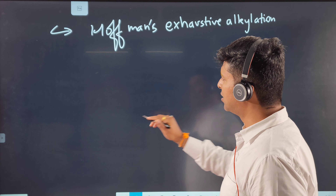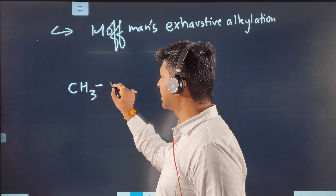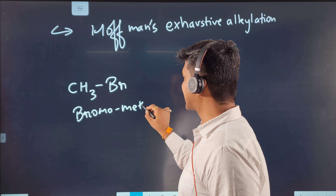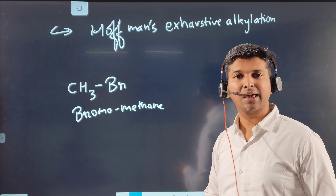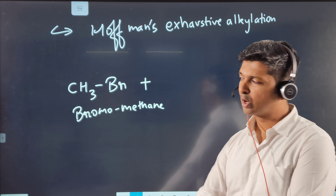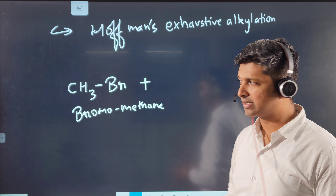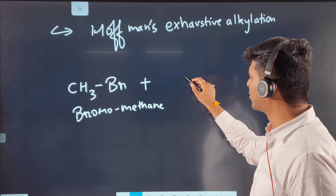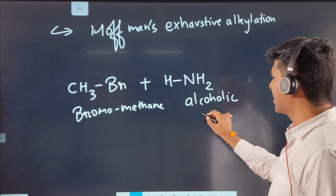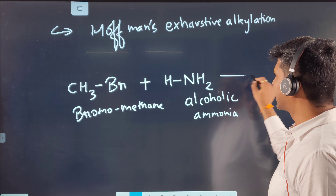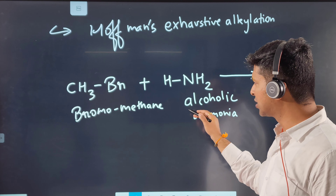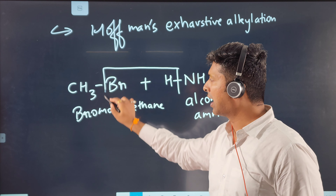In this reaction I'll use bromomethane — a primary or secondary haloalkane. Tertiary haloalkanes cannot be used; I'll explain why later. We use bromomethane with alcoholic ammonia — ammonia dissolved in alcohol. This reaction is also called ammonolysis, meaning breaking a chemical bond using ammonia.